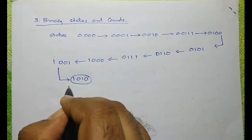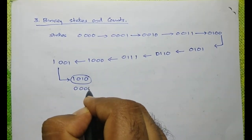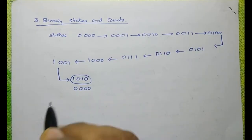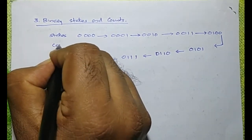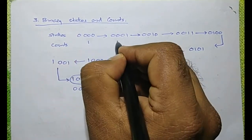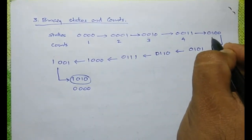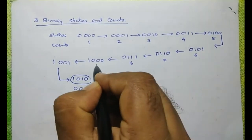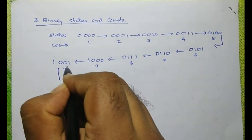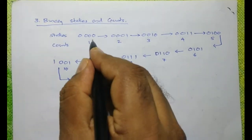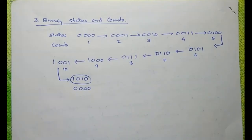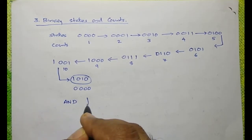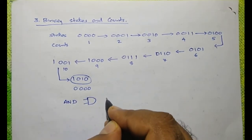So, this should be replaced by 0000. This is what is meant by reset. These are the states, and the counts are the first, second, third, fourth count and so on. After the tenth count, it should reset to the original state. This is established with the help of an AND gate and the reset terminals.